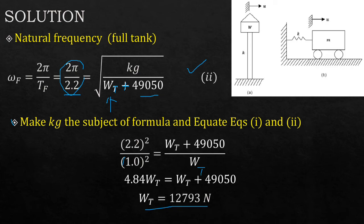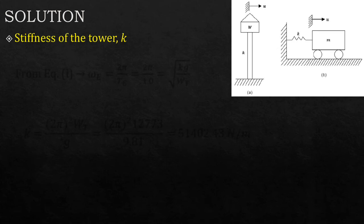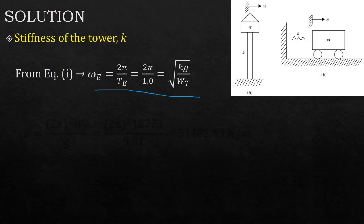Then how about the stiffness? We know from equation one, remember the equation one was like this. When the tank is empty, 2π over TE. We are looking where we have kg as the only unknown, because now we have calculated WT, the weight of the tank.